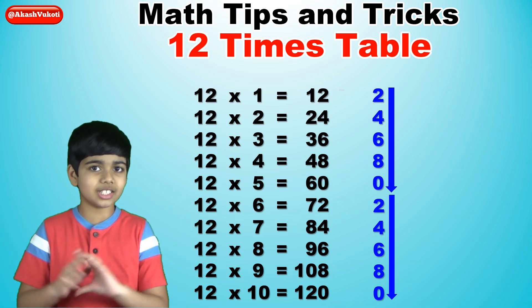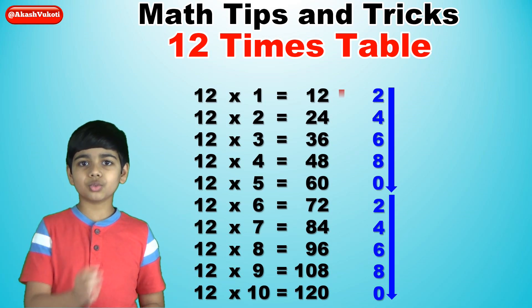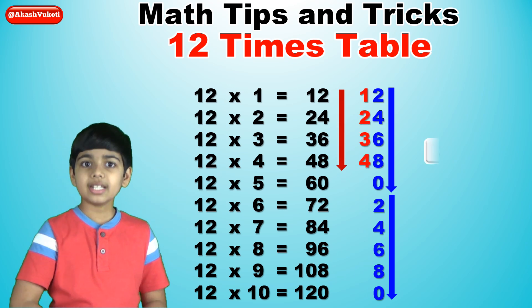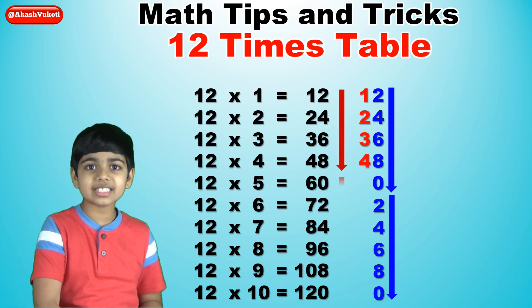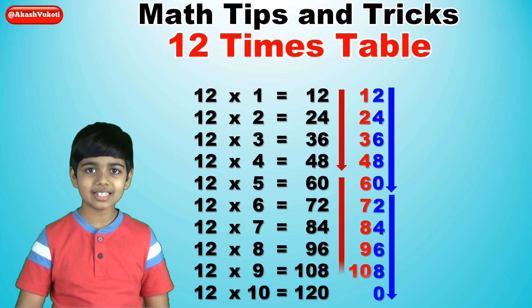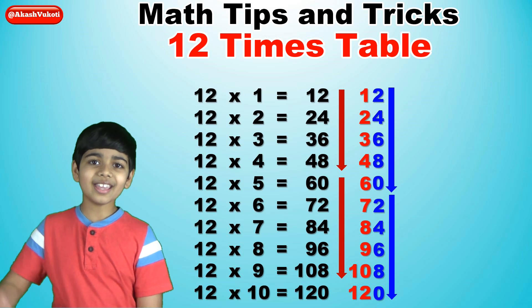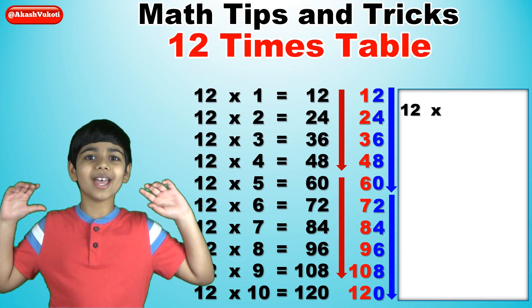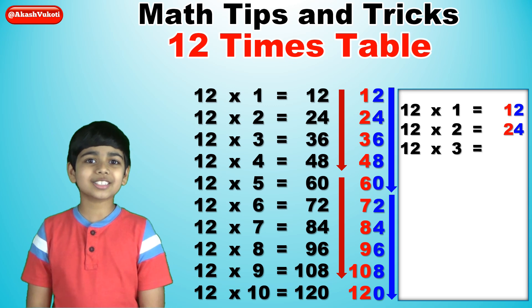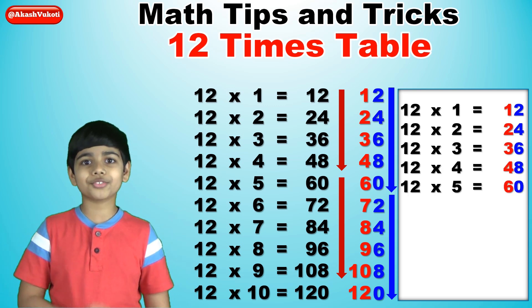So feel free to extend this if you want. Write 1, 2, 3, 4, skip the 5, 6, 7, 8, 9, 10, skip the 11, 12. And there we go — we now have the 12 times table. It's a really neat way to learn the 12 times table.